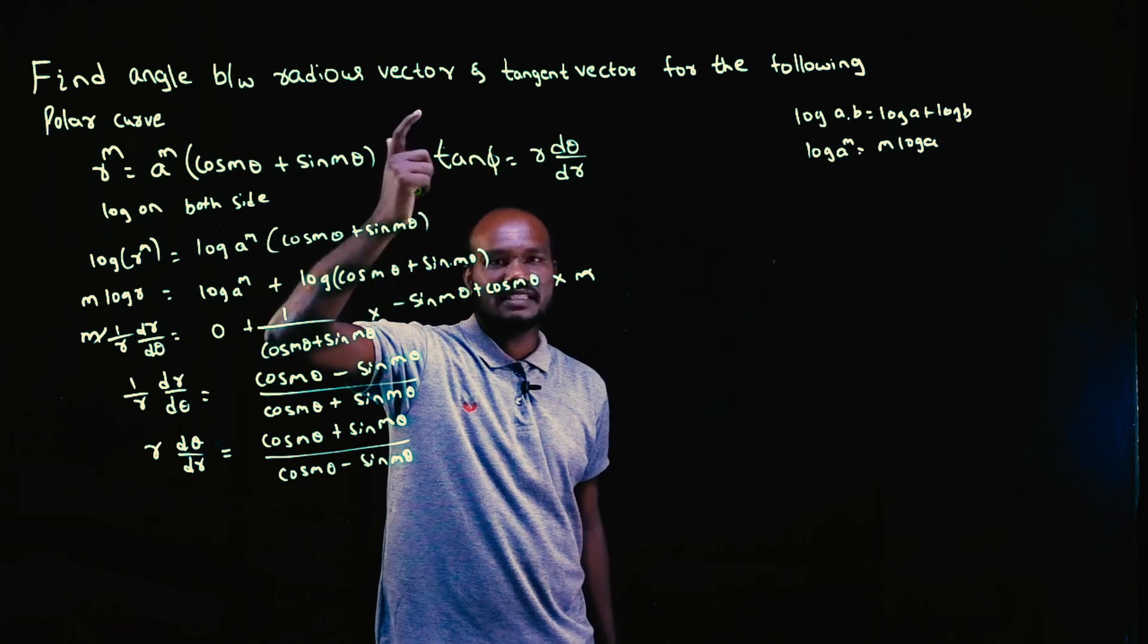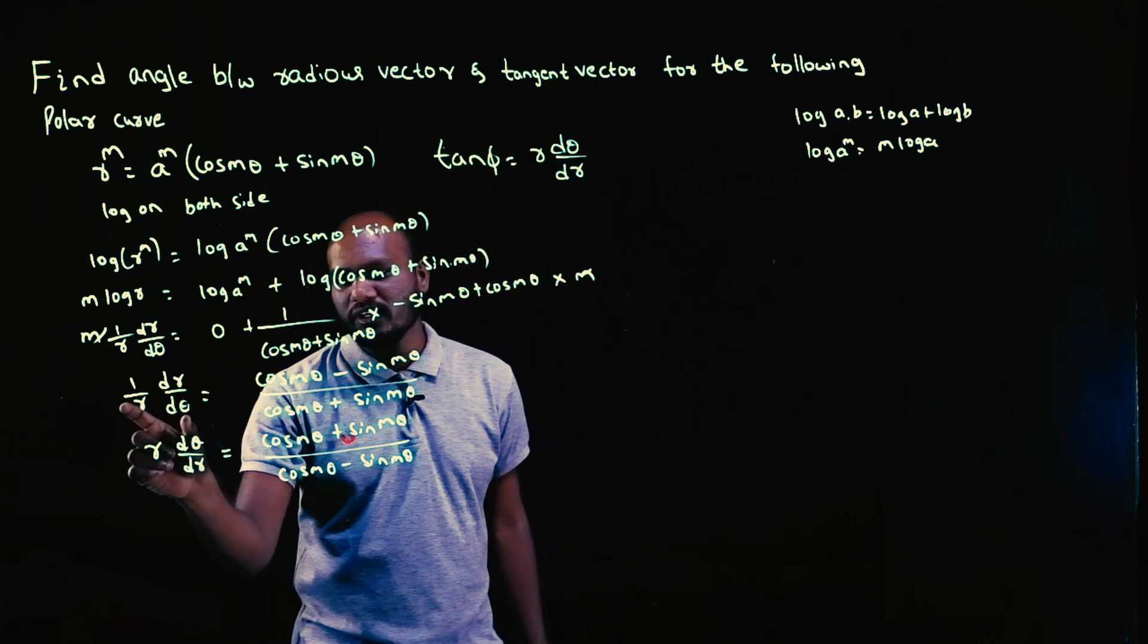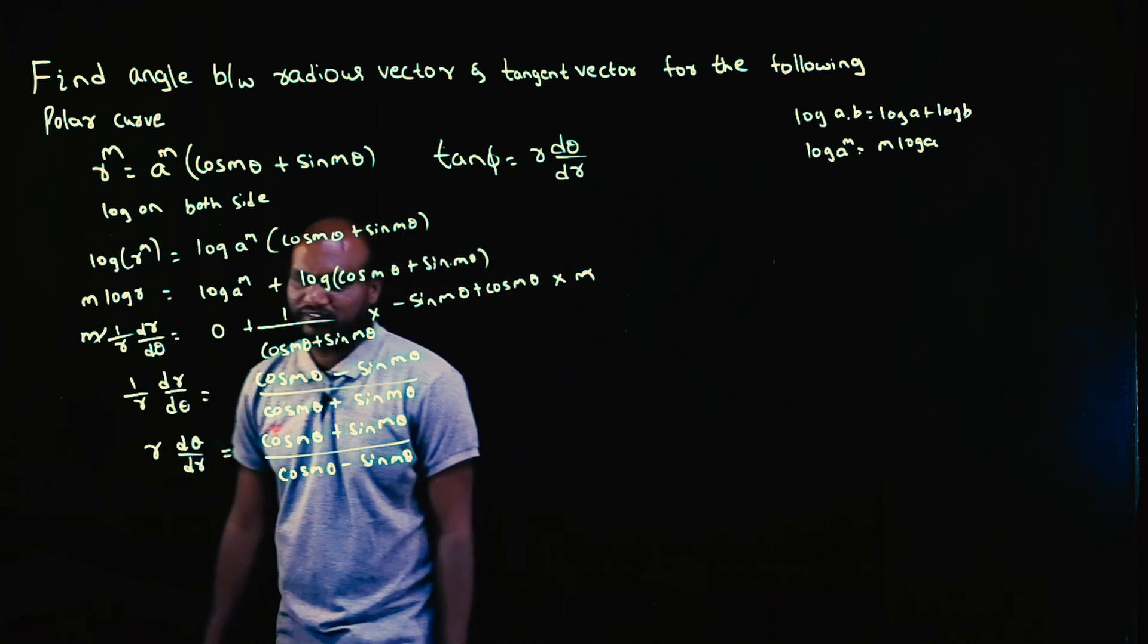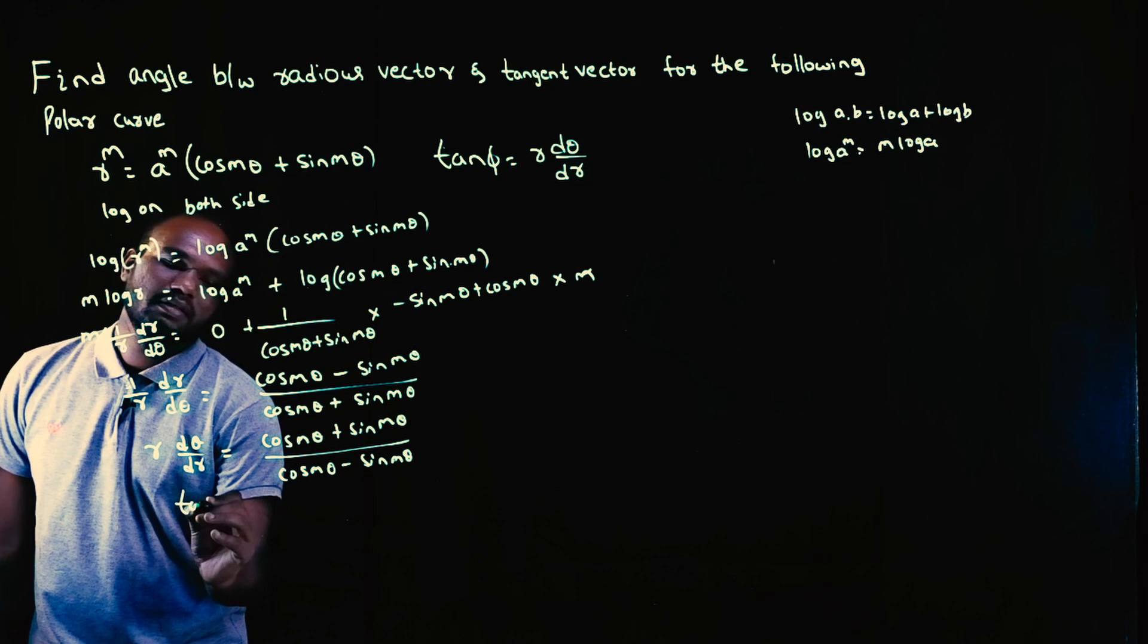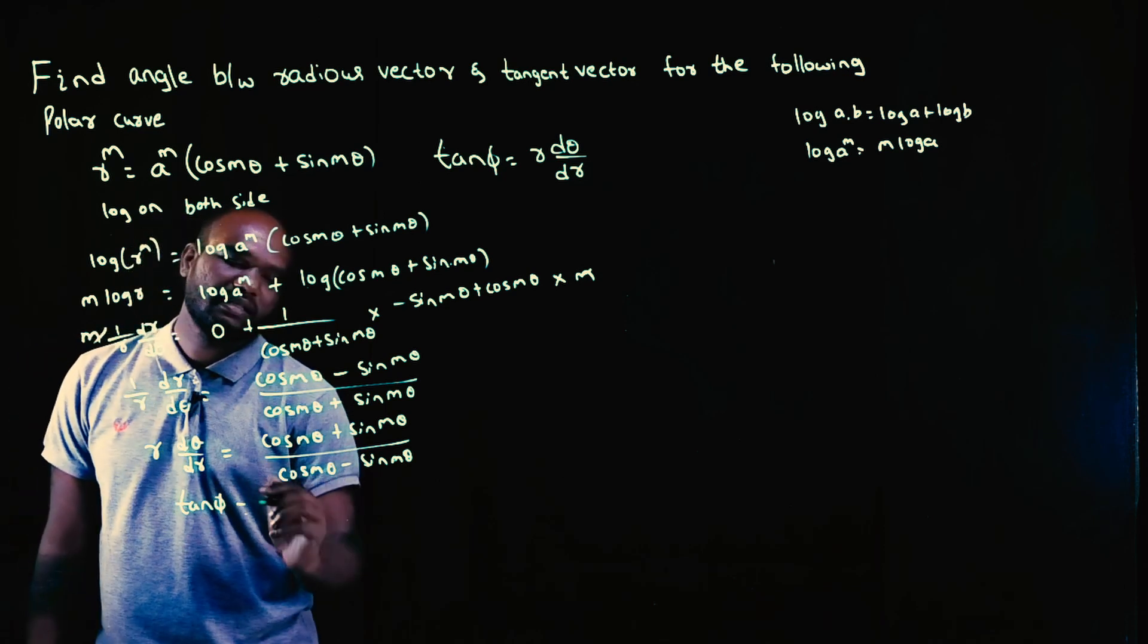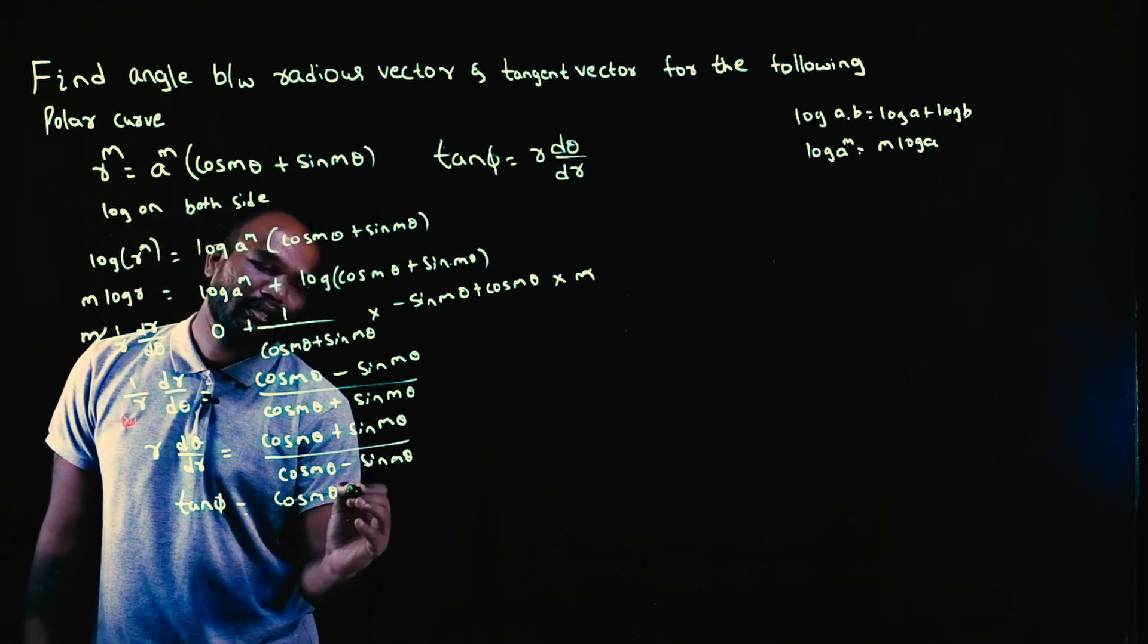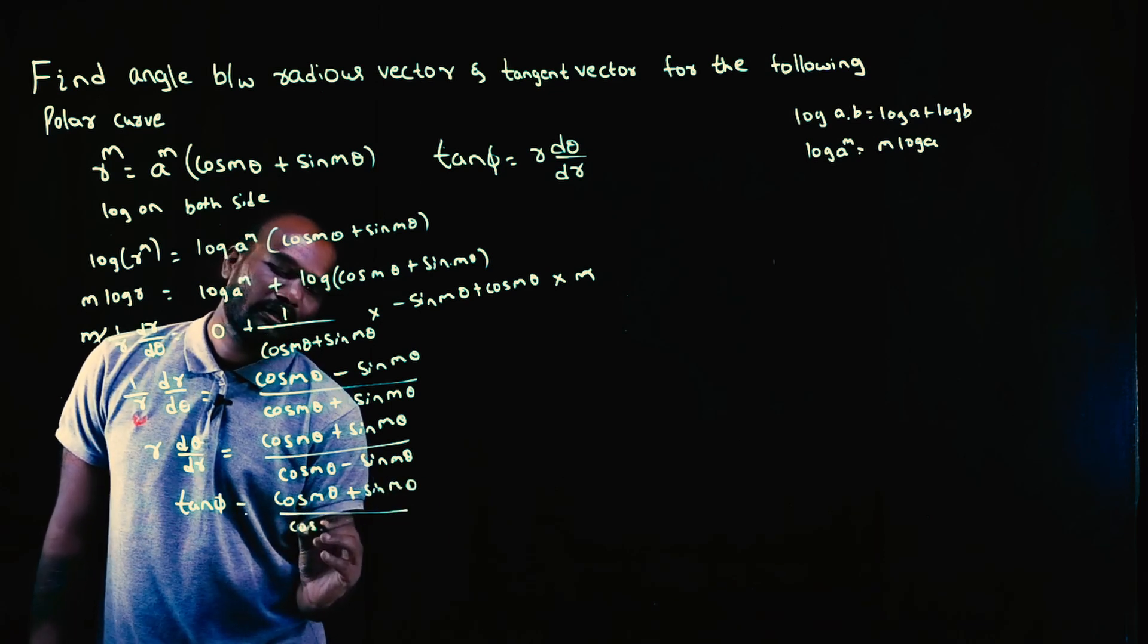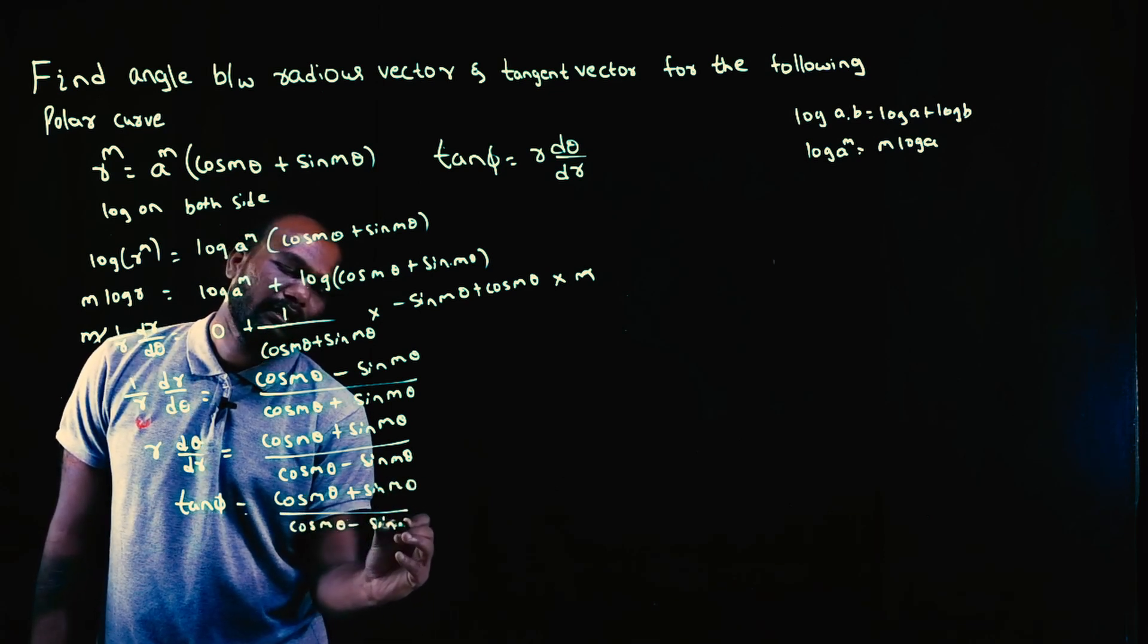It's better to remember always in the form of tan phi. So tan phi equals (cos m theta + sin m theta)/(cos m theta - sin m theta).